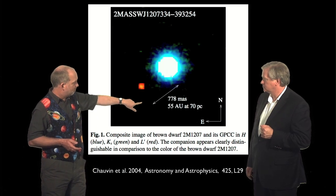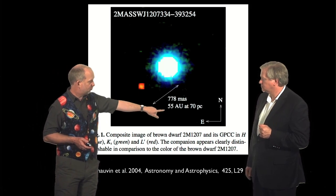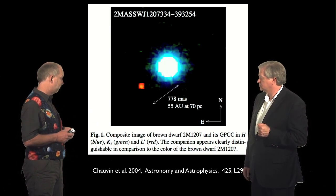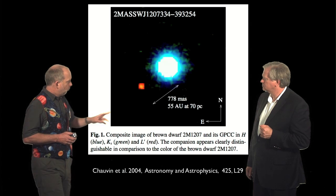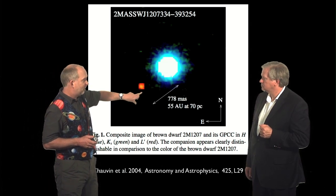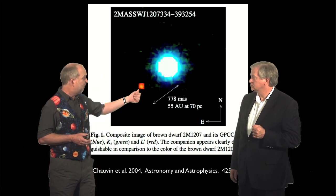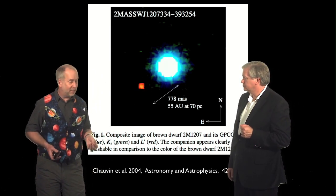0.8 arcseconds away. It's 55 astronomical units away, so that's actually considerably further out than Pluto is from the Sun in our own solar system. This thing, from its brightness and its age, is probably about five times the mass of Jupiter. This is a big object, and it's very young, which is why we can see it.